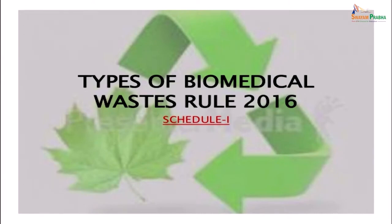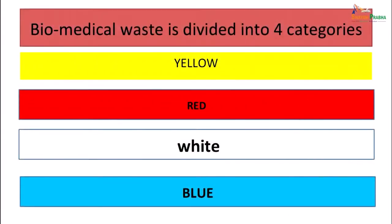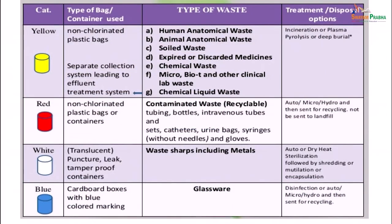Now the types of biomedical waste as per the 2016 rules (Schedule 1) are different. The biomedical waste is now divided into four categories: yellow, red, white and blue. The yellow category should use a non-chlorinated plastic bag and can collect human anatomical waste, animal anatomical waste, soiled waste, expired or discarded medicines, chemical waste, micro-bio and other clinical waste, and chemical liquid waste. Liquid waste specially needs to go to a separate sewage and effluent treatment system. The rest collected in yellow bags needs to be incinerated, plasma pyrolysis done, or deep burial done. Incineration is very high-temperature oxidation that generates complete destruction of the waste. In plasma pyrolysis, very high temperatures are used but methane gas and other gases including carbon monoxide are produced, which finally need to be destroyed.